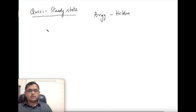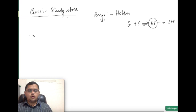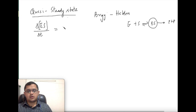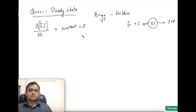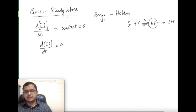So what does the quasi-steady state say? According to this, whatever intermediate forms in the reaction — here the intermediate is ES — the change of intermediate concentration with respect to time is zero; there is no change. So in mathematical differential equation form, d[ES]/dt equals zero. This is the steady-state approach developed by Briggs and Haldane.